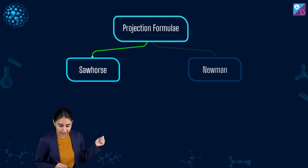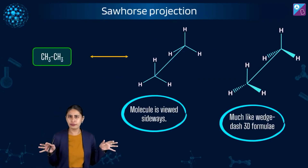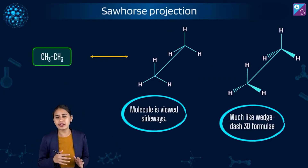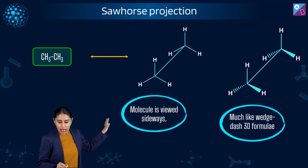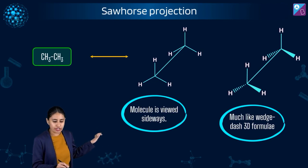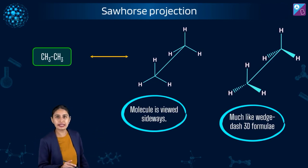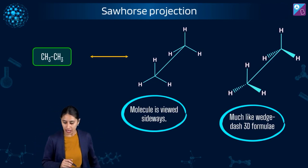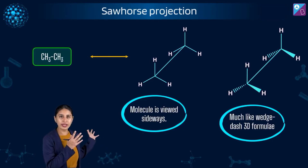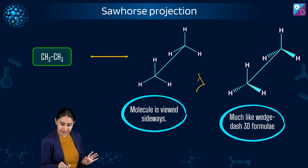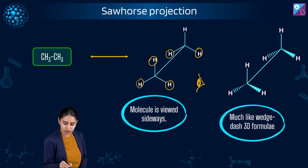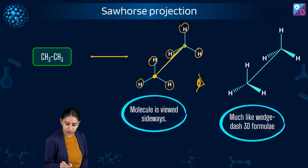When we talk about sawhorse, imagine these kinds of slant lines. Now, how are we viewing a molecule? Let's say ethane — CH3, CH3. In ethane, the molecule is viewed sidewise. If you see it sidewise, we have three hydrogens here, three hydrogens here, and one carbon here and one carbon here. So, two carbons and six hydrogens.